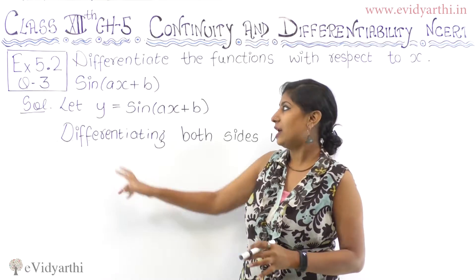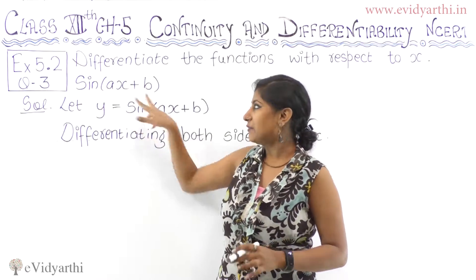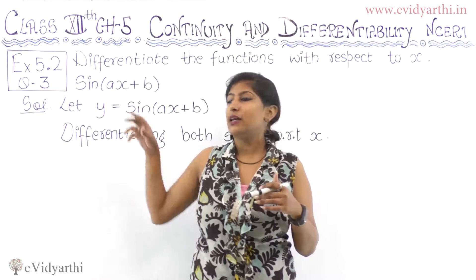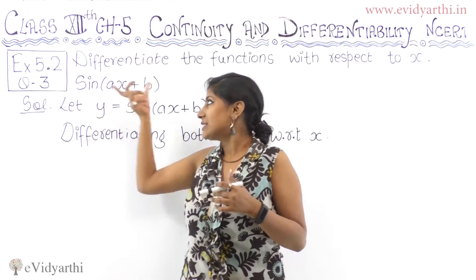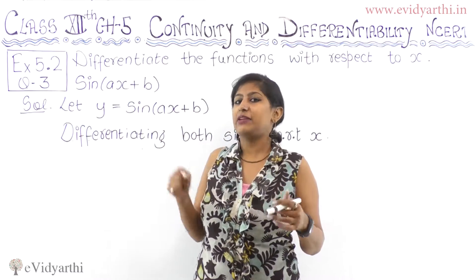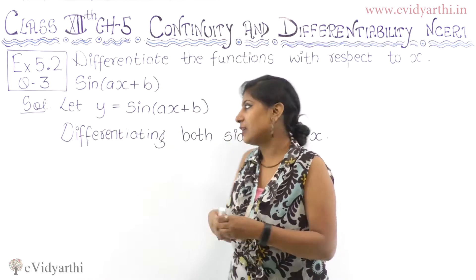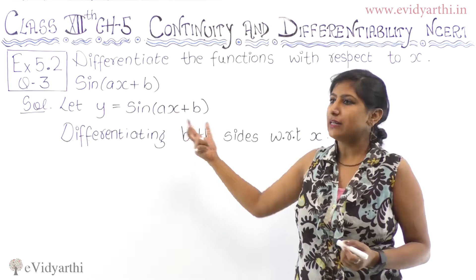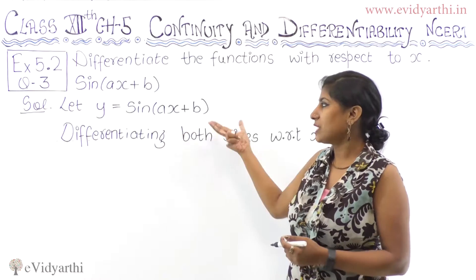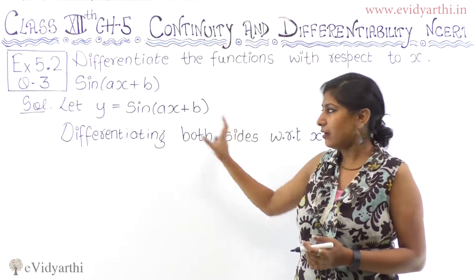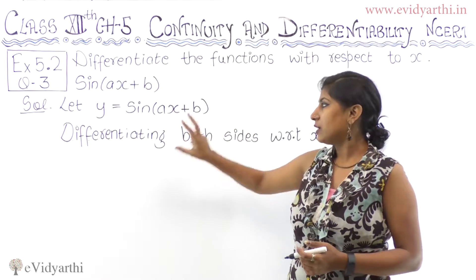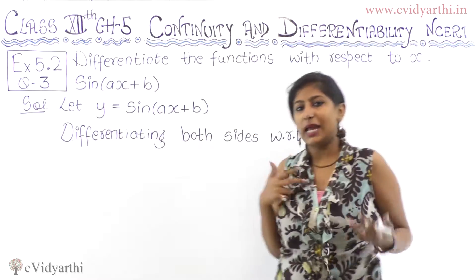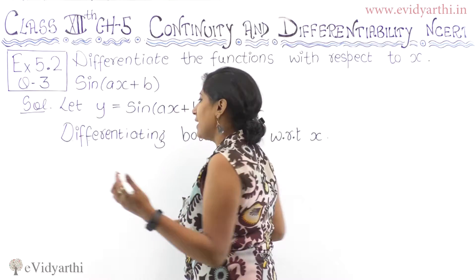What is the first question? sin(ax + b). First of all, you have to write y is equal to sin(ax + b). Then you differentiate both sides with respect to x.